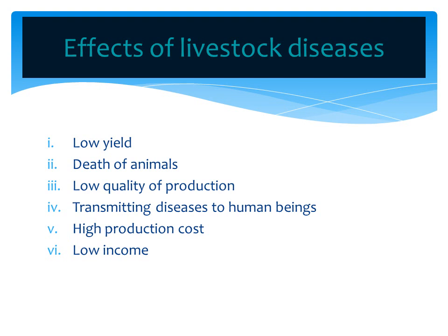Lastly, number six: low income. When we talk about low income to the farmer, it is due to low yields and high costs of production. For instance, a farmer has bought feeds worth $80,000. The animal is fed for the whole month and the farmer expects good yields, but all of a sudden the animal reduces milk from 10 liters to 6 liters. By the end of one month, the farmer has low income, which equates to loss.